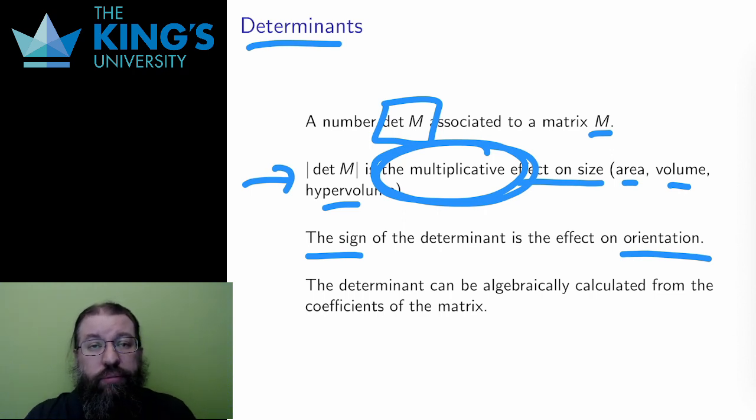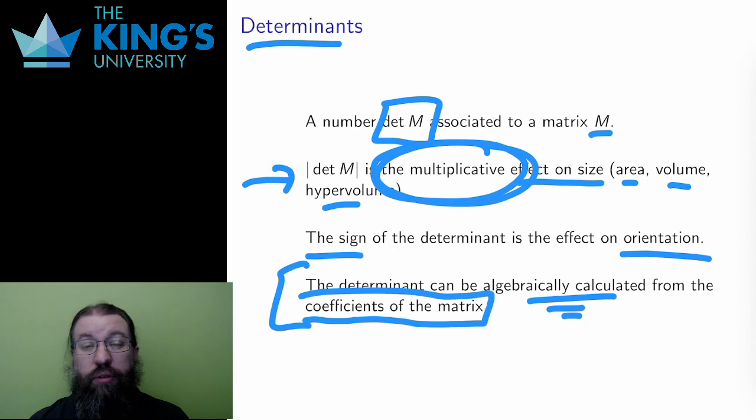All right, that's lovely. It would be great to have such a number that measures all this information. Well, it has one more property. This number is actually calculatable. I can get it using algebra from just the coefficients of the matrix. And this is pretty remarkable. Just using these numbers in the matrix, I can calculate these effects in general. And this is yet more evidence for the wonder of the matrix catalog of transformations. It does so much, and I can extract so much information from the matrix.